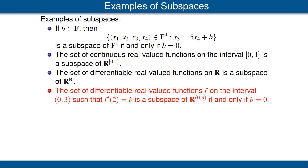For our next example, fix a real number b and consider the set of differentiable real-valued functions f on the open interval from 0 to 3 such that f'(2) equals b. It's easy to see that this is a subspace of the set of all functions from the open interval (0, 3) to R if and only if b is 0. Again, the reason we need b to be 0 is we need the function that's identically 0 to be in this set, and the derivative of that function at 2 is 0.